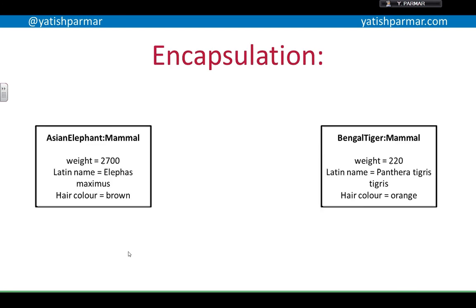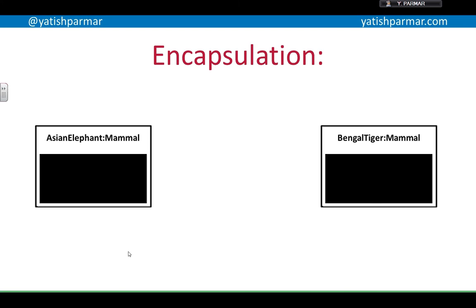Going back to encapsulation — I have an Asian elephant mammal and I have a Bengal tiger mammal. Now because of encapsulation, those properties — the attributes within each object — are hidden. The Bengal tiger might want to eat the Asian elephant, but it doesn't know whether that's a good idea because it can't see the weight of that mammal. What it can see though is the get weight method. So it can do AsianElephant.getWeight(), and that will return some kind of number — say 2,700 kilos — and then hopefully the Bengal tiger will have some processing that makes it decide it's not a good idea to attack the elephant. This is just reiterating the concept of encapsulation.